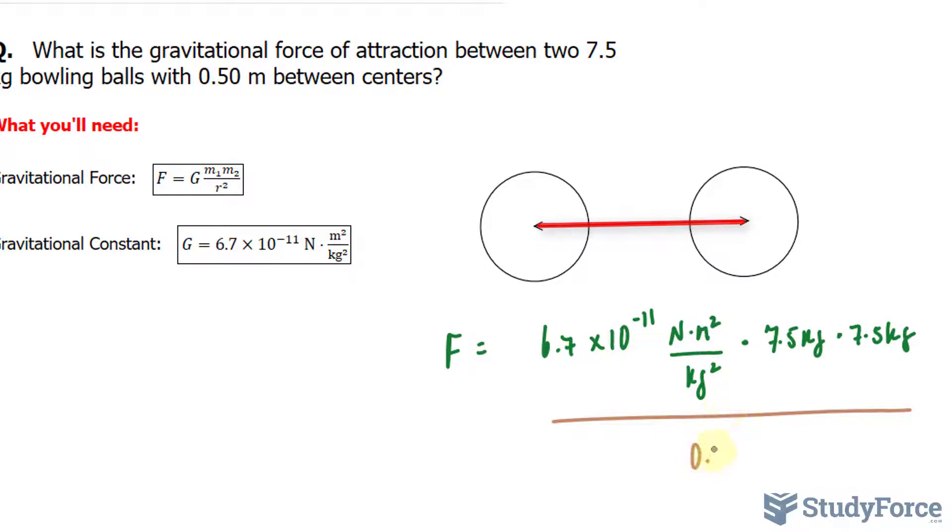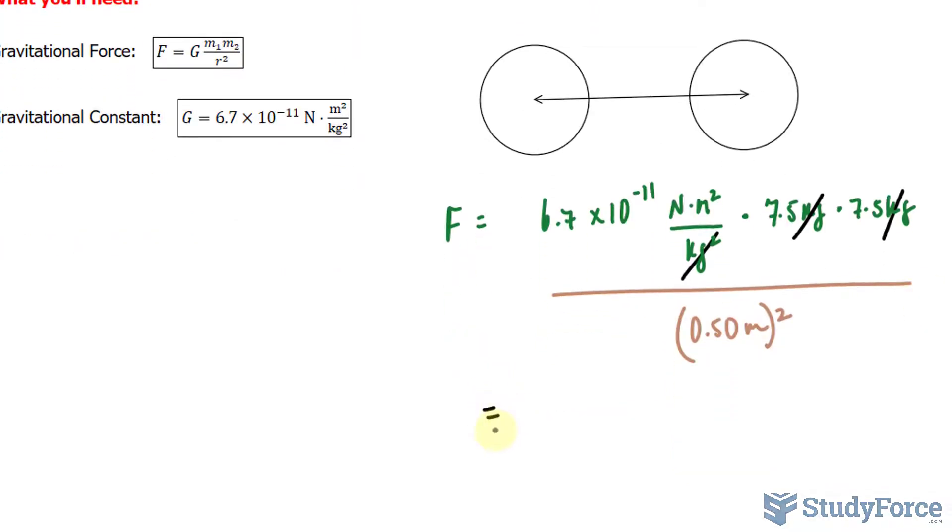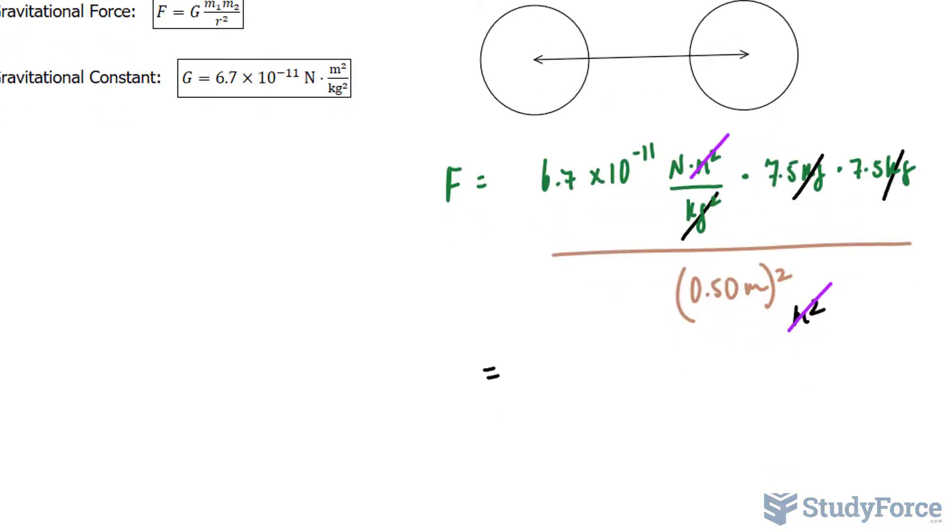So I'll write down 0.50 meters and that's being squared. Now take a look, notice that this unit and this unit will cancel out with the kilograms squared at the bottom and if we divide this out we'll have first of all meters squared after you distribute that power of 2 and that will cancel out with this unit leaving us with force being in newtons only.